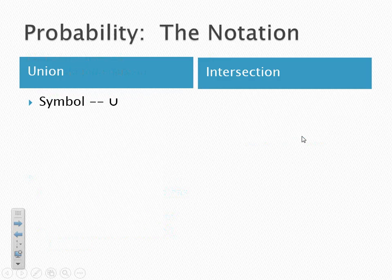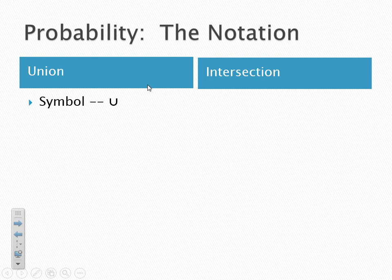Let's get into some notation for probability settings. We've got two important ideas to cover: the union and the intersection. Each of these has special symbols you'll see in your textbook. A union has a symbol that looks like a U. If I had A union B, essentially we're saying A or B.